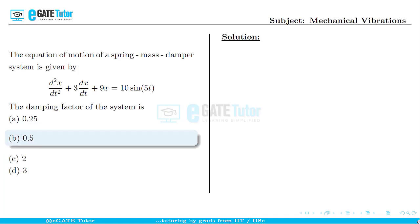This is a question from mechanical vibrations for one mark. The equation of motion of a spring mass damper system is given by d²x/dt² + 3dx/dt + 9x = 10sin(ϕt).